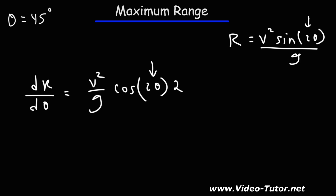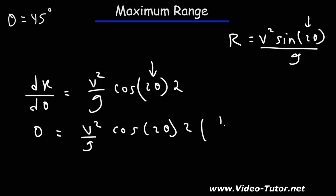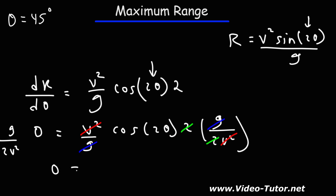Now we set the derivative equal to 0 and solve for theta. We multiply both sides by g over 2v squared so that v squared cancels, g cancels on the right, and the twos cancel. Since 0 times anything is 0, this becomes: 0 equals cosine of 2 theta.